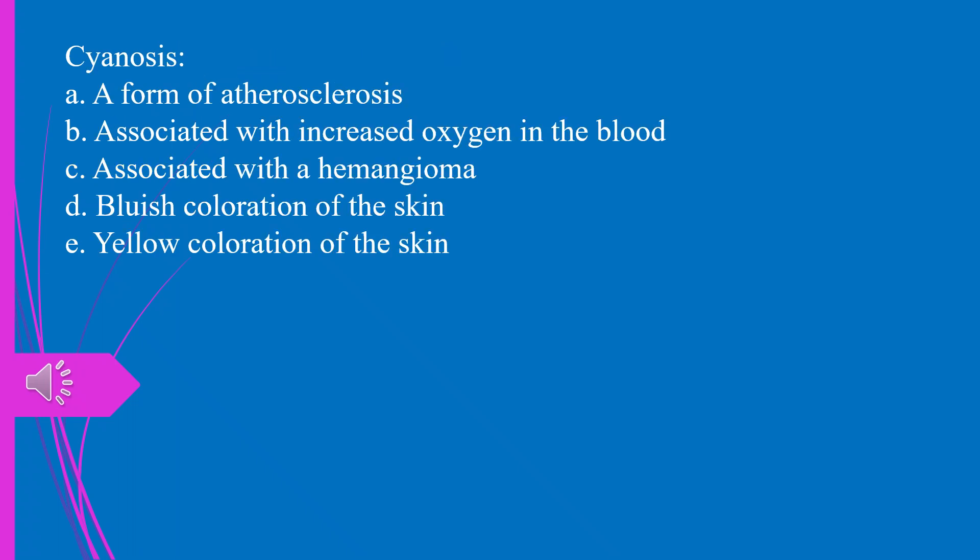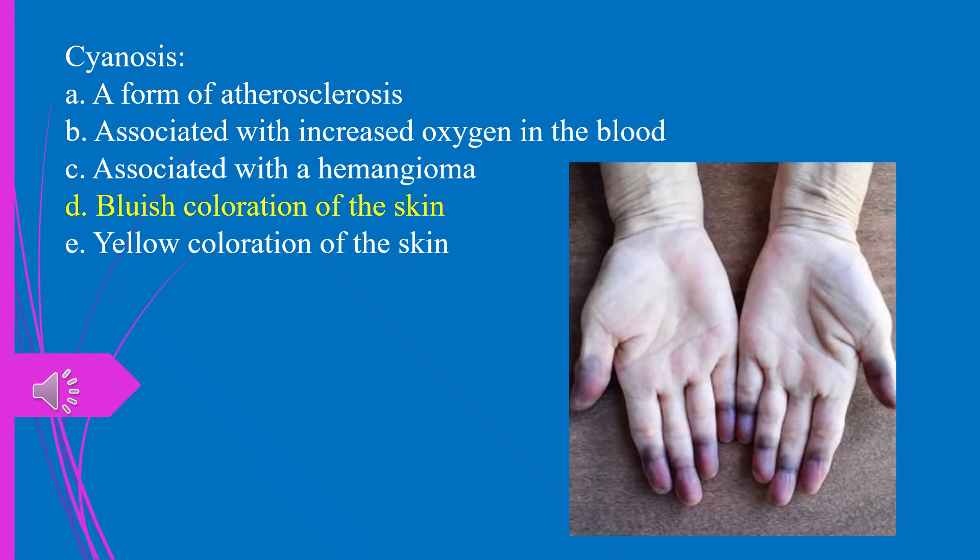Cyanosis. A. A form of atherosclerosis. B. Associated with increased oxygen in the blood. C. Associated with a hemangioma. D. Bluish coloration of the skin. E. Yellow coloration of the skin. The answer is D. Bluish coloration of the skin.